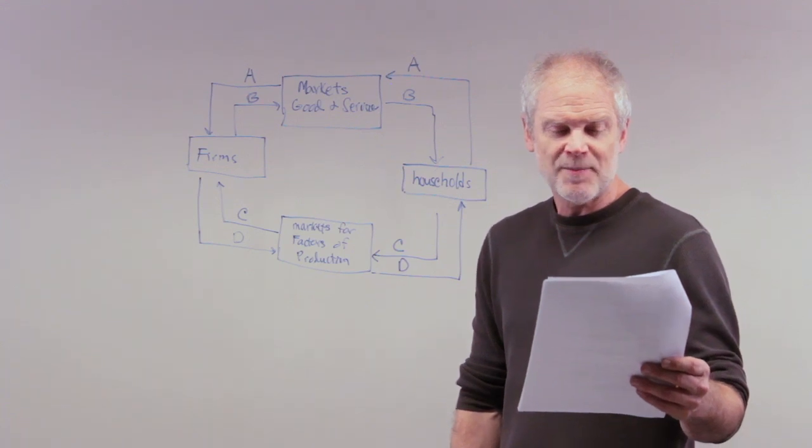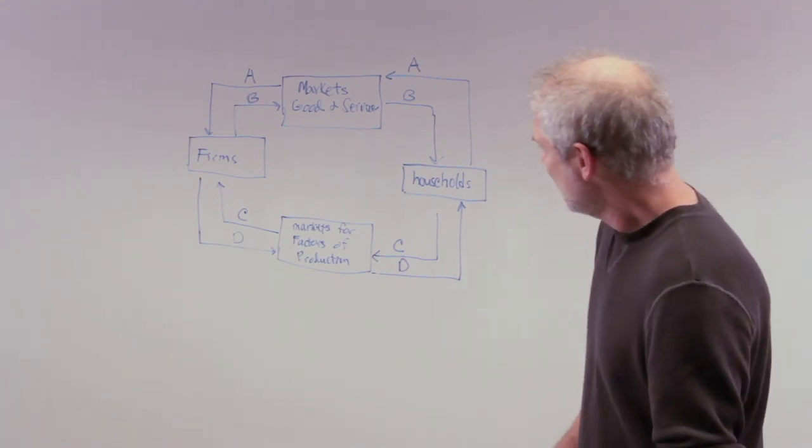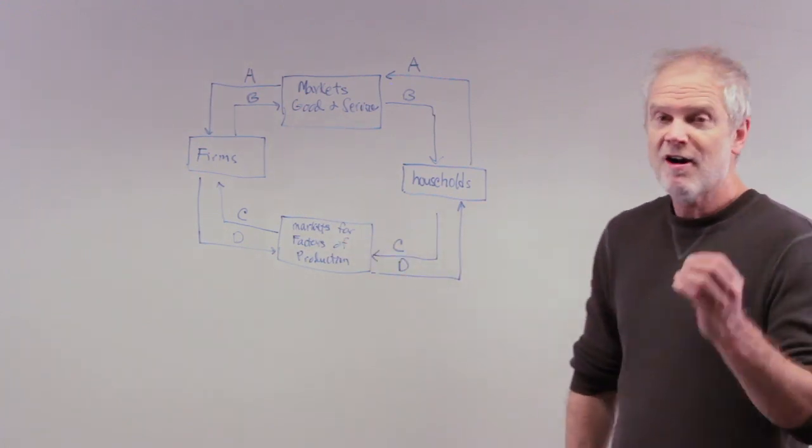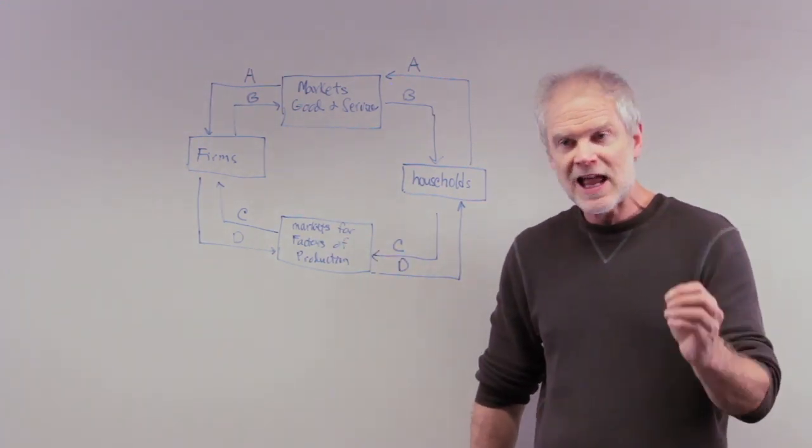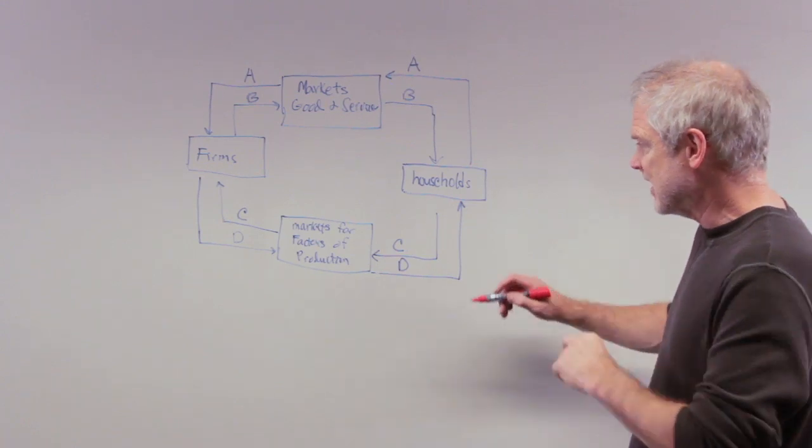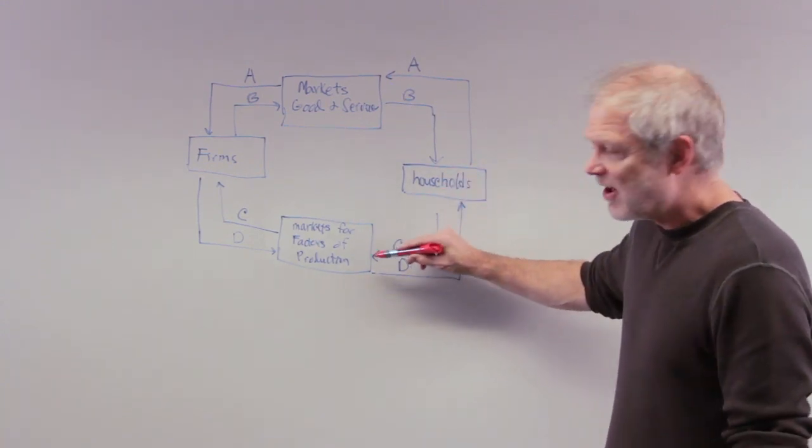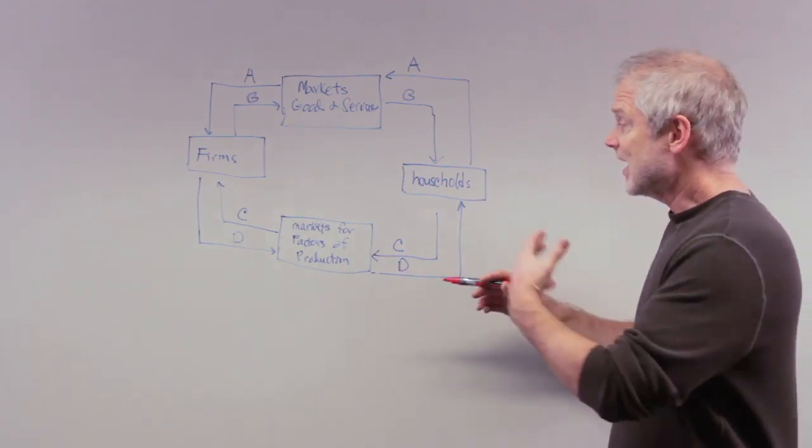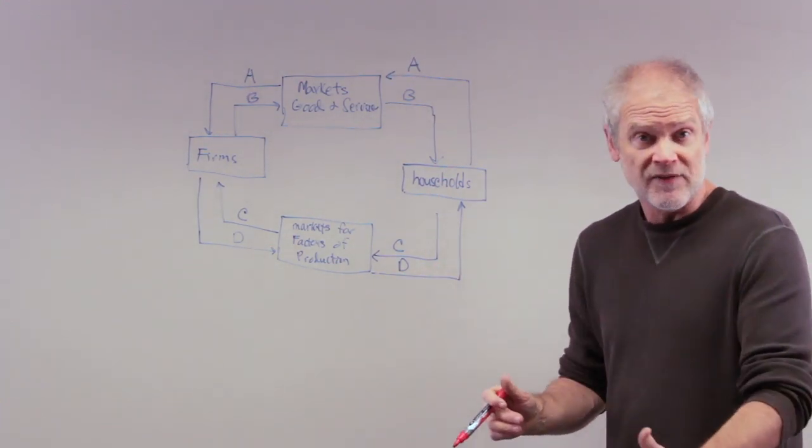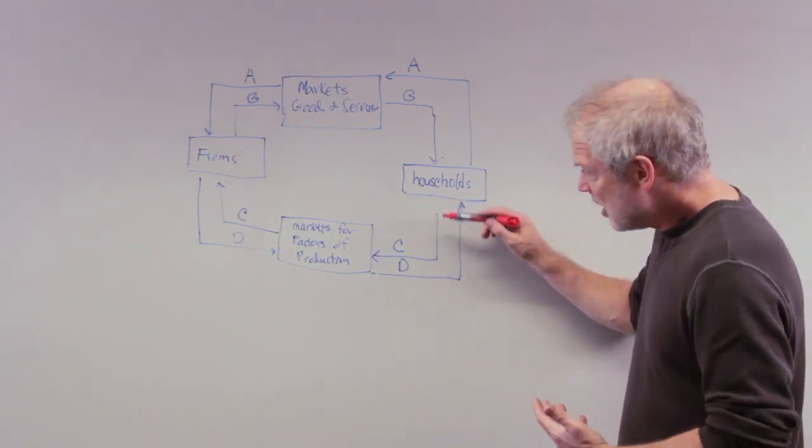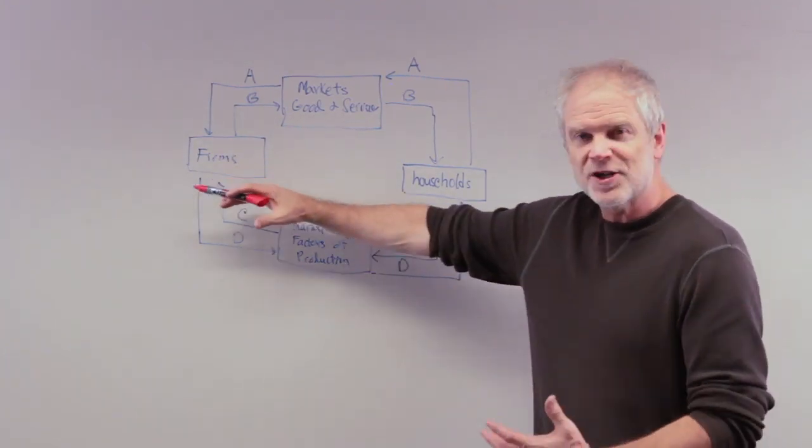Which arrow represents the flow of land, labor, and capital? Markets for the factors of production are land, labor, and capital. What it's saying here is essentially that there are households which sell their factors of production—I sell my labor, I sell my capital in the sense that I put savings in the bank, I may even sell my land or rent my land—but that goes in so firms can use these materials to produce things.